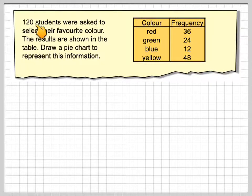So it says here 120 students were asked to select their favourite colour. The results are shown in a table, draw a pie chart to represent this information. So here we've got colour: red, green, blue, yellow, and here we have the frequency.